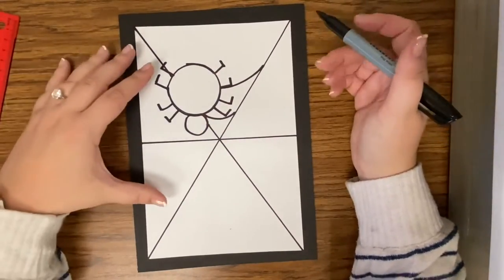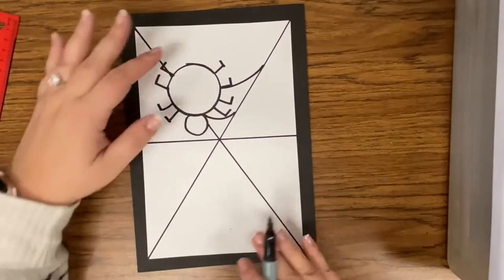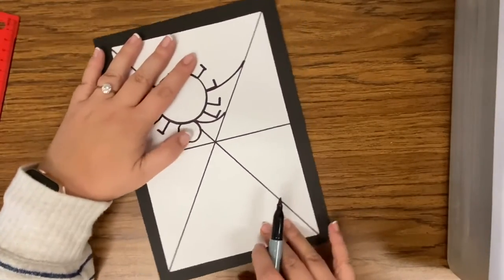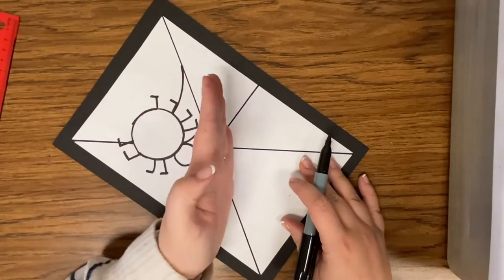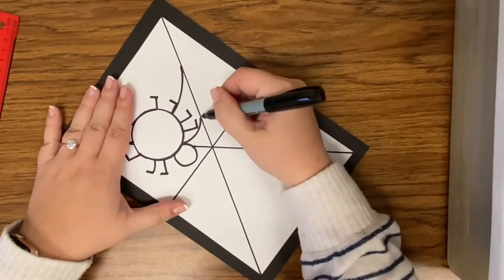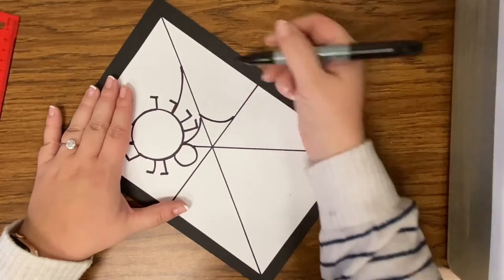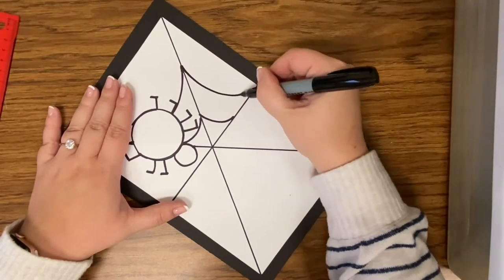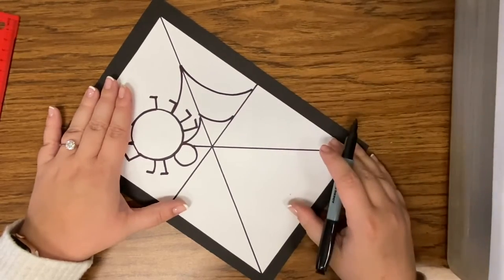Okay, and we're gonna do this all the way around. So it's easier if you rotate your page so this triangle is now right in front of you, and we're gonna do one smiley face curve and two smiley face curves. Okay, two smiley faces.